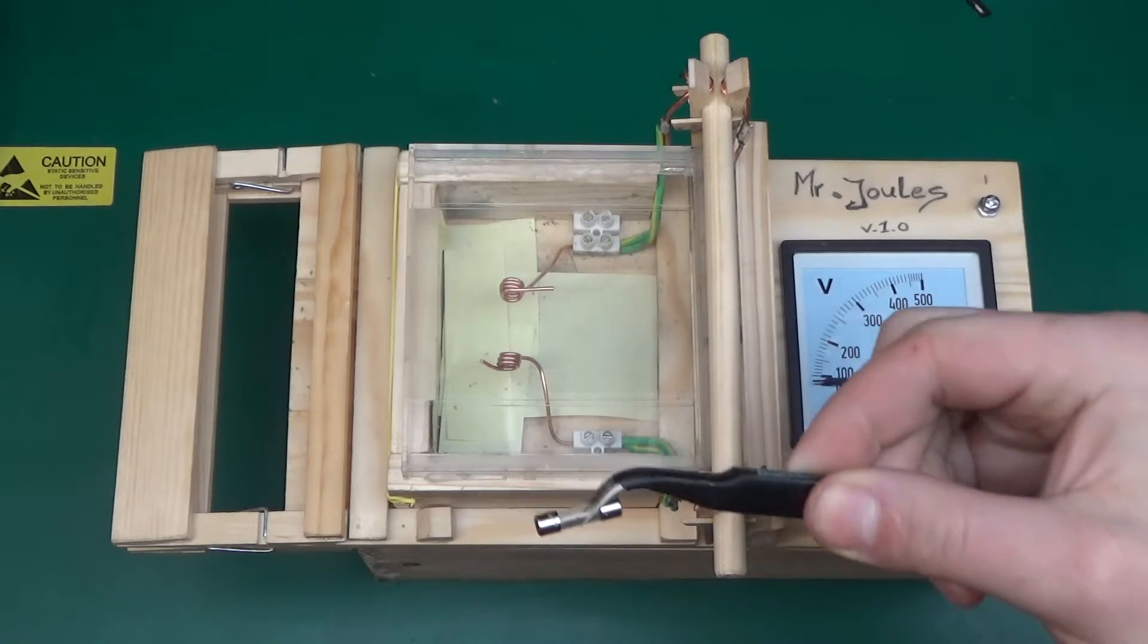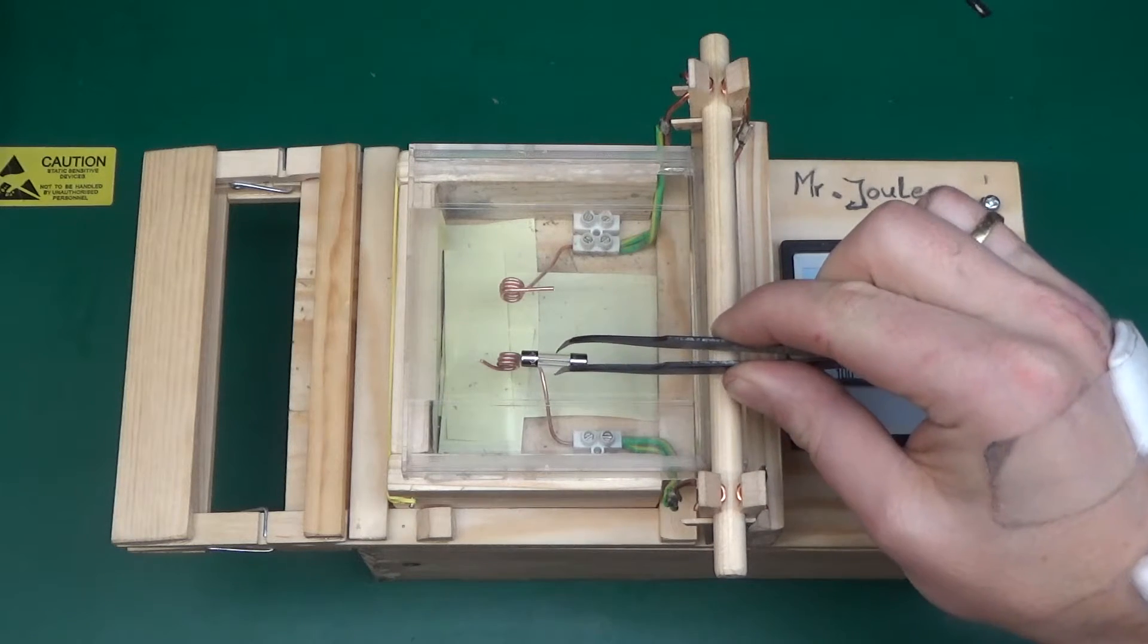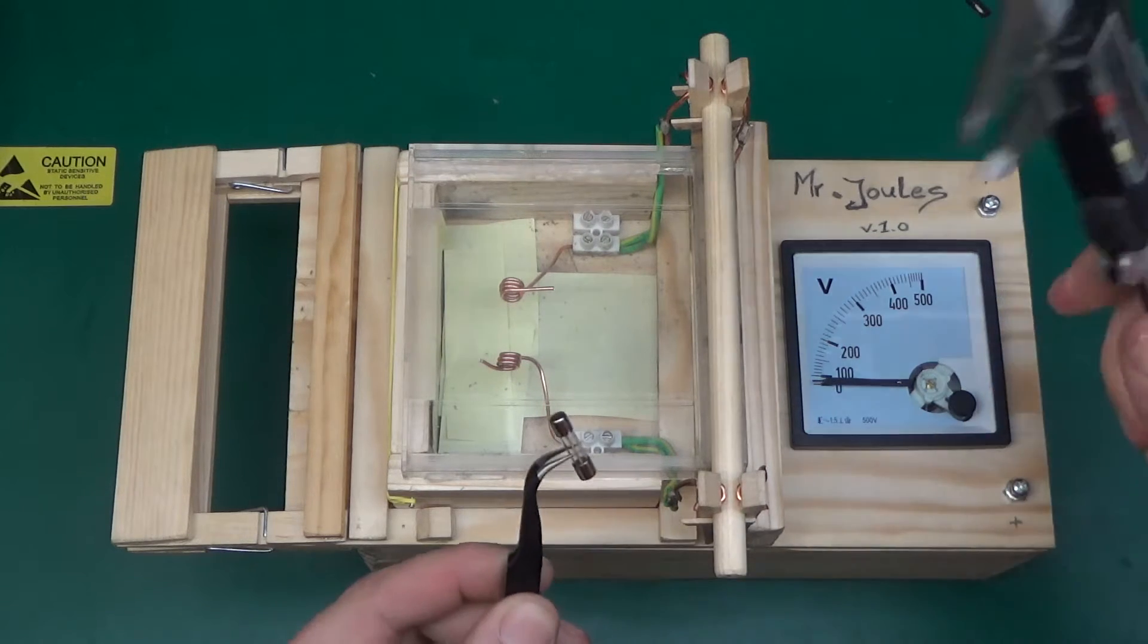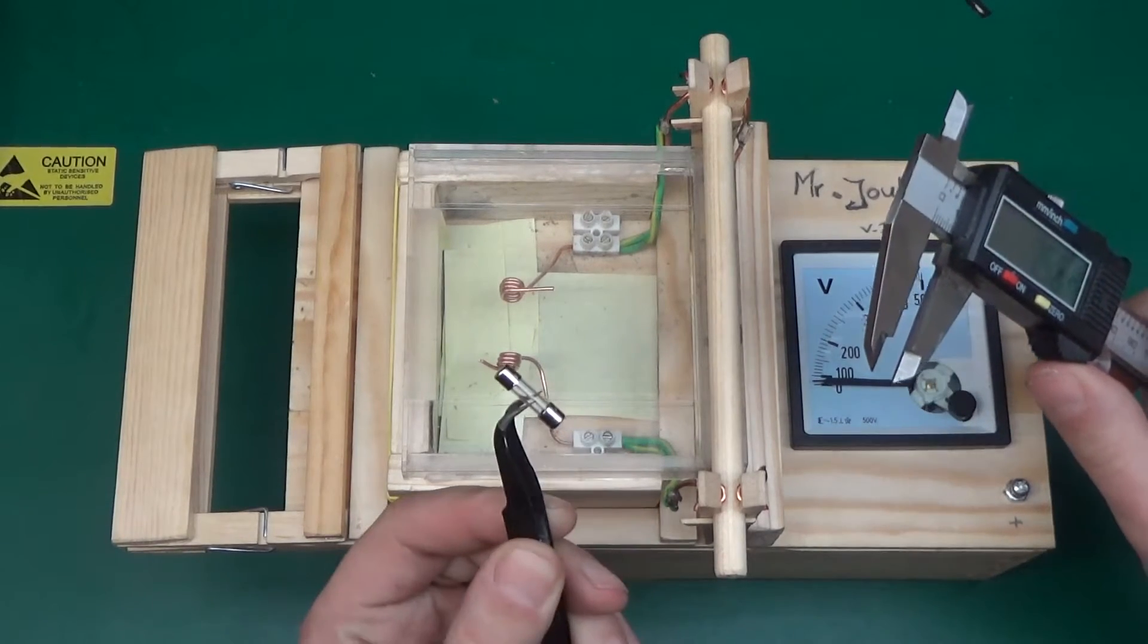Now this is a standard variety glass fuse commonly found in a lot of equipment, and the idea behind this is to hopefully illustrate why one should use a proper fuse, HRC type, in multimeters rather than this cheap variety.